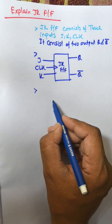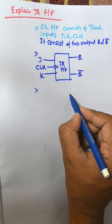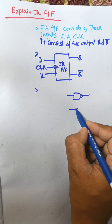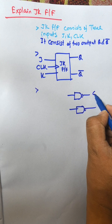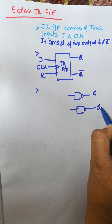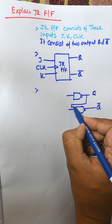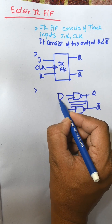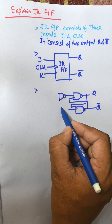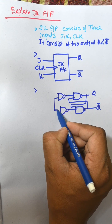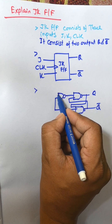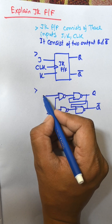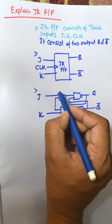And the circuit diagram starts with a NAND-based latch. This is Q and Q-bar. The outputs feed back — Q-bar feeds back to this one and Q feeds back to this one. This is the clock CLK, this one is J, and this one is K.